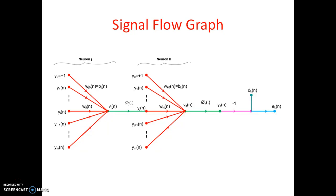This is the signal flow graph. First neuron is J, so the inputs are from Y0 to Ym and obviously the weights are Wji of N and after that the activation function is represented here as phi of dot. After activation function the output is Yj of N.